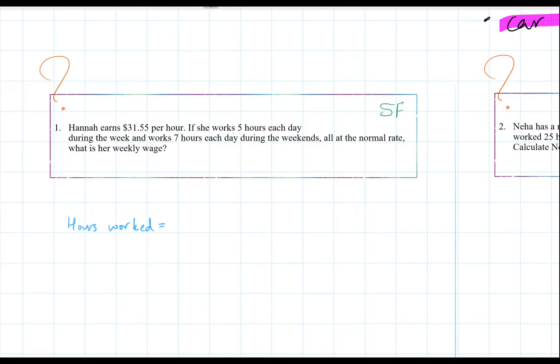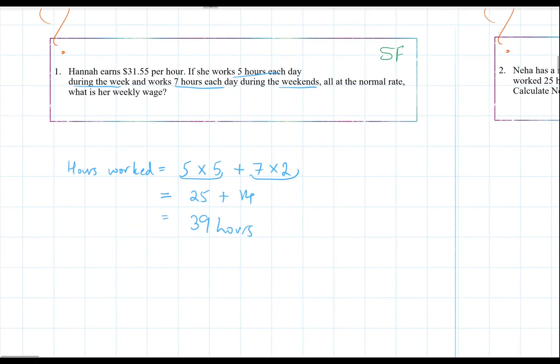So she's worked 5 hours each day during the week. That's 5 work days times 5 hours each day. Plus she's worked 7 hours each day on the weekends. So that's 7 hours for 2 days, Saturday and Sunday. So 5 times 5 is 25 plus 7 times 2 is 14. So 39 hours is what she's worked.